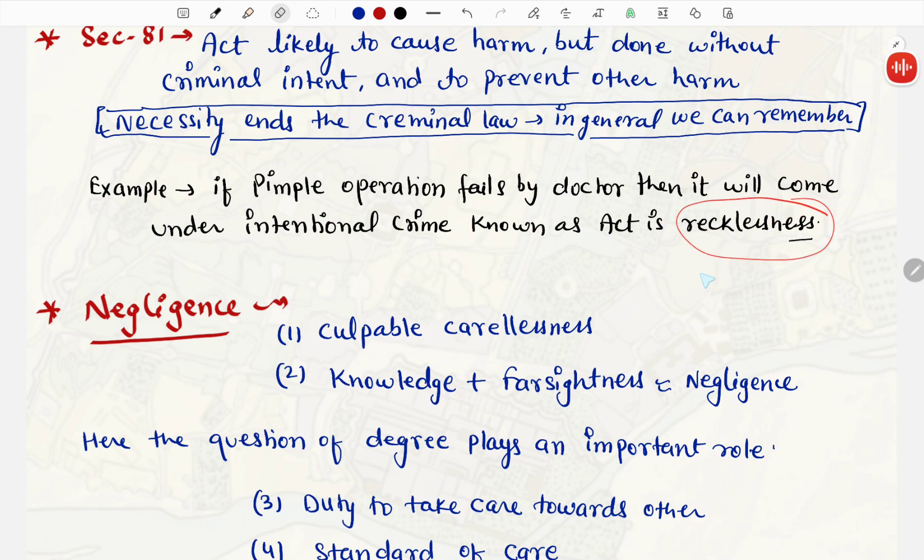Recklessness, la parvahi ka, ek example le sakte kya? Agar aapka koi pimple operation ke liye, aap jara hai, kisi doctor ke paas, aur woh pimple operation fail ho jai, aur aapki death ho jai, to yahan doctor hai, woh book ho ga, under intentional crime, known as act of recklessness. Recklessness ho gai, doctor ki taraf se, la parvahi kari jay hai, usne, ek pimple operation me, death kaise ho sakti hai.